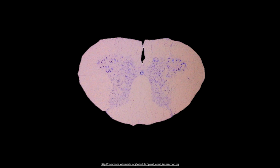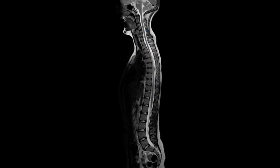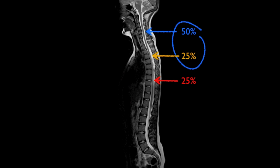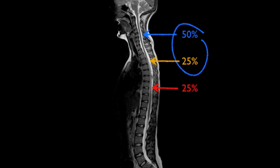Ependymomas of the spinal cord arise from the central canal, which is lined by ependymal cells. Their distribution along the cord is not even, with the majority being present within the cervical cord, and only a quarter being located within the thoracic cord. An additional quarter spans the cervicothoracic junction, and as such approximately three quarters of ependymomas are located in the upper cord.